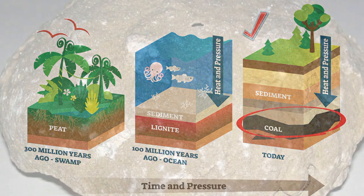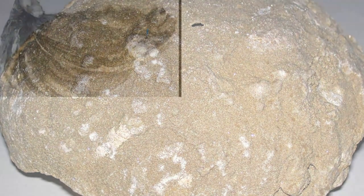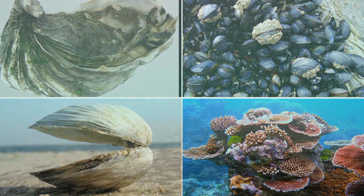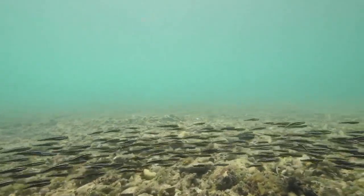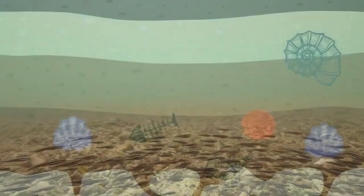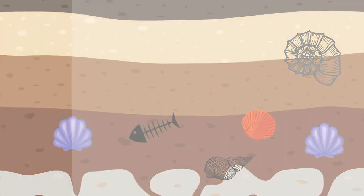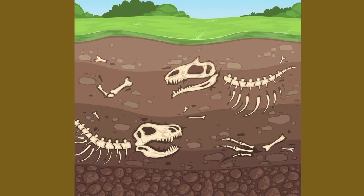Some limestone is another example of organic sedimentary rock. Organisms such as oysters, clams, mussels, and coral die and their shells and bones are broken down by the ocean and settle onto the ocean floor. Over time, these layers of sediment begin to form, and during burial and lithification, the sediment precipitates out of the water and limestone is formed. Fossiliferous limestone is limestone with a large number of fossils.